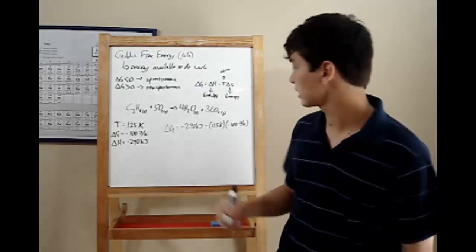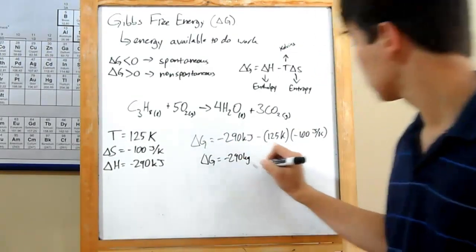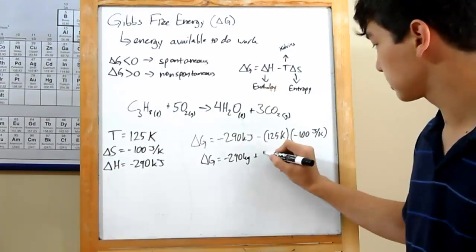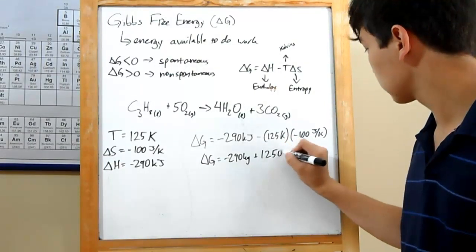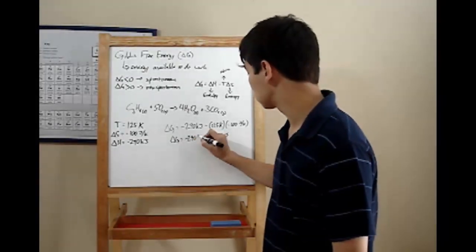Let's simplify. Multiplication first. Delta G equals negative 290 kilojoules. Multiplying this through will give us plus 12,500 joules. Now you might think that you just need to add at this point.